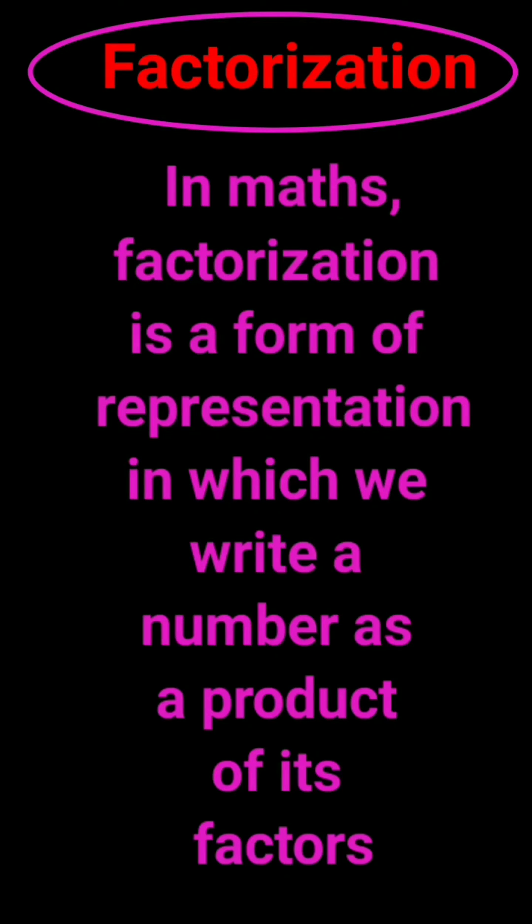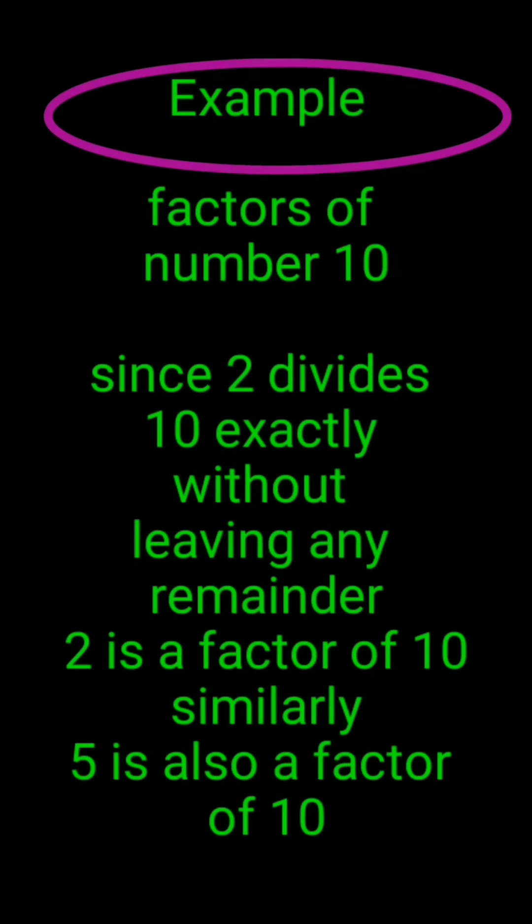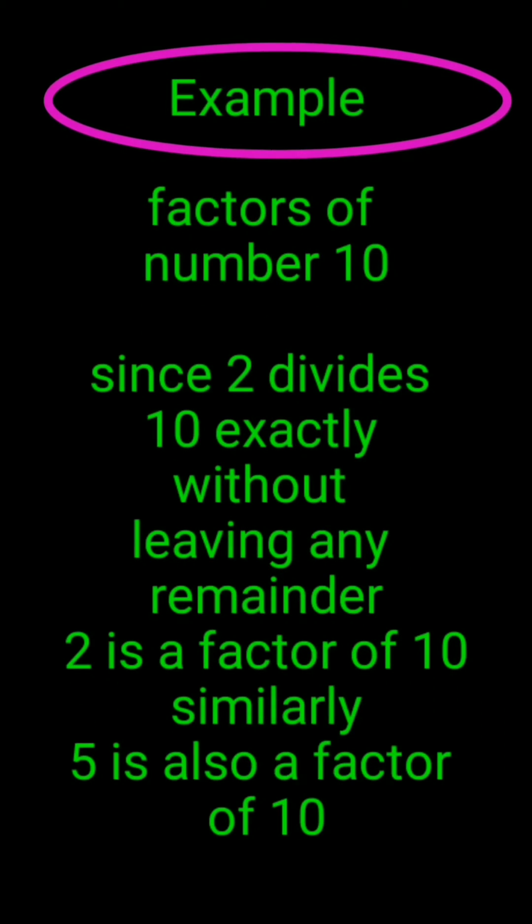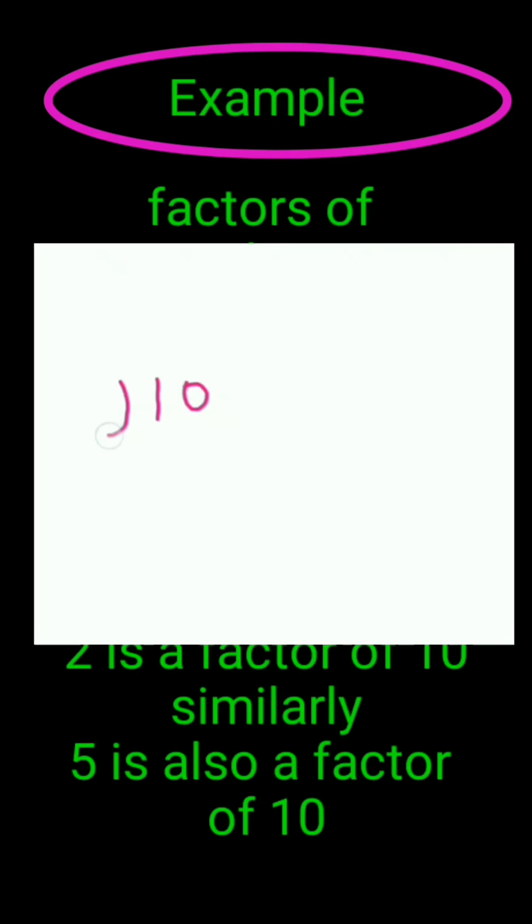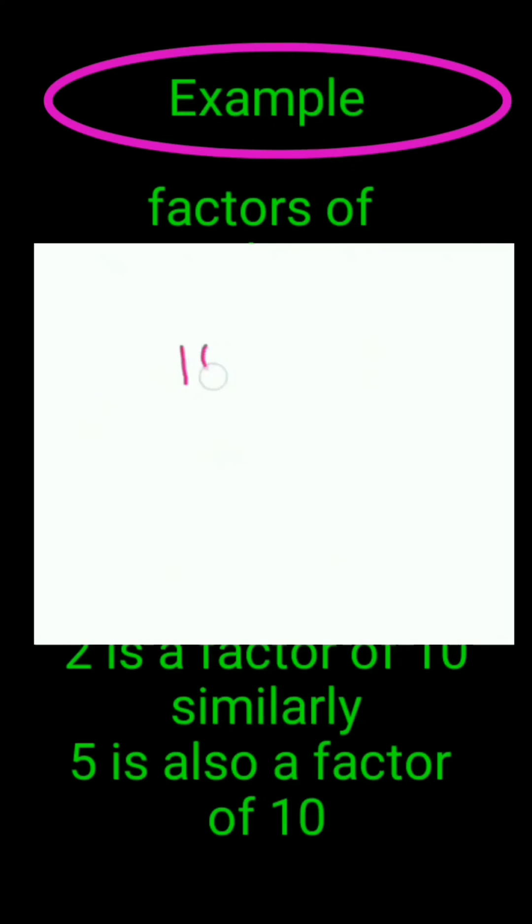For example, suppose there is a number 10 and we want to know what are the factors of 10. Any number that exactly divides this number 10 will be called its factor. We can exactly divide 10 by 2. Two 5s are 10, therefore 2 is a factor of 10.